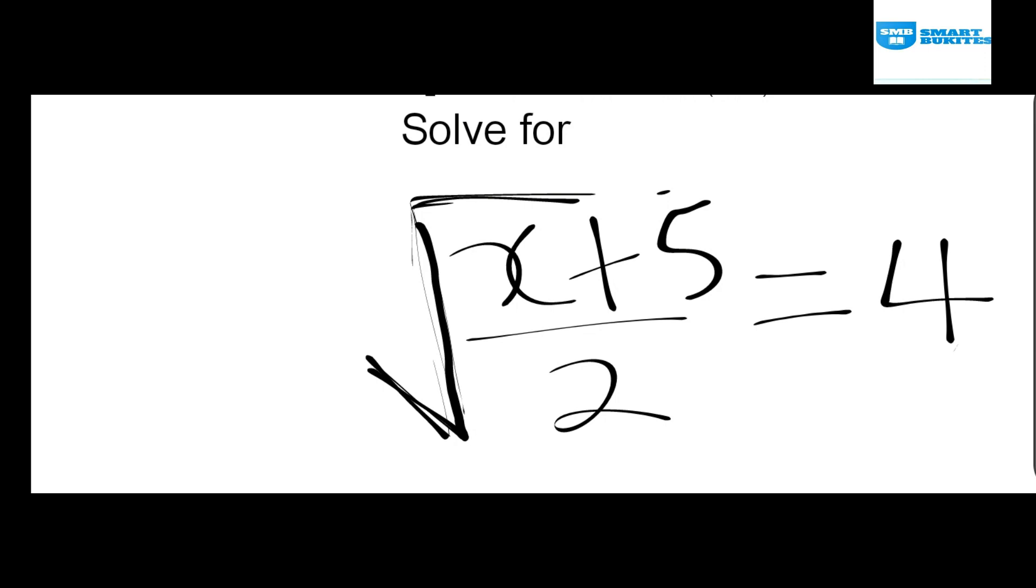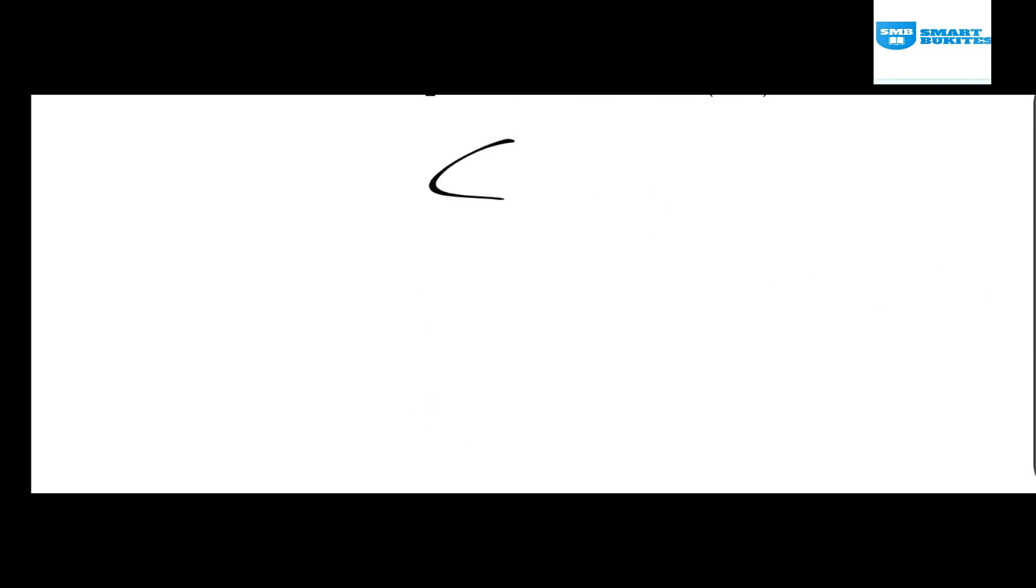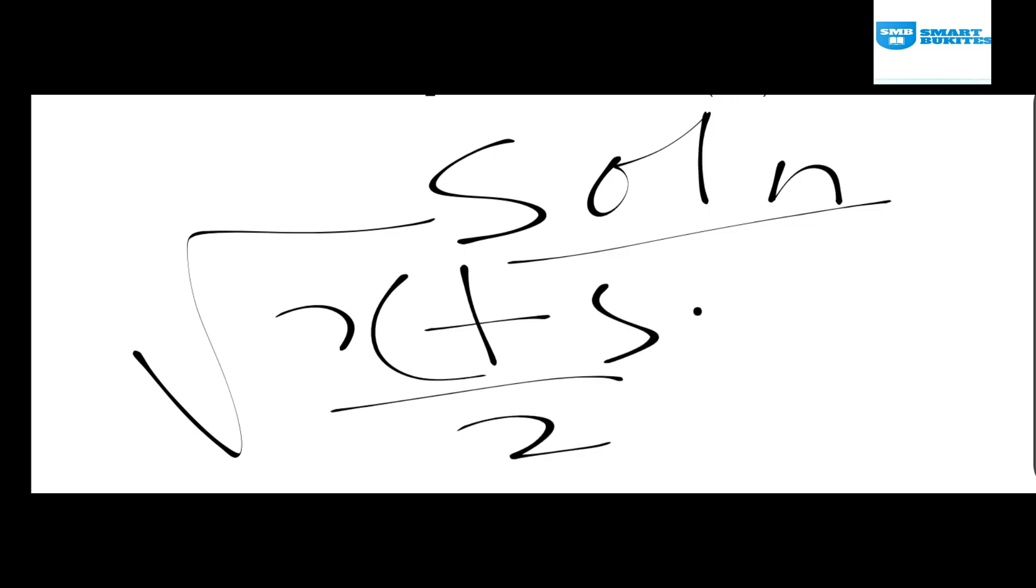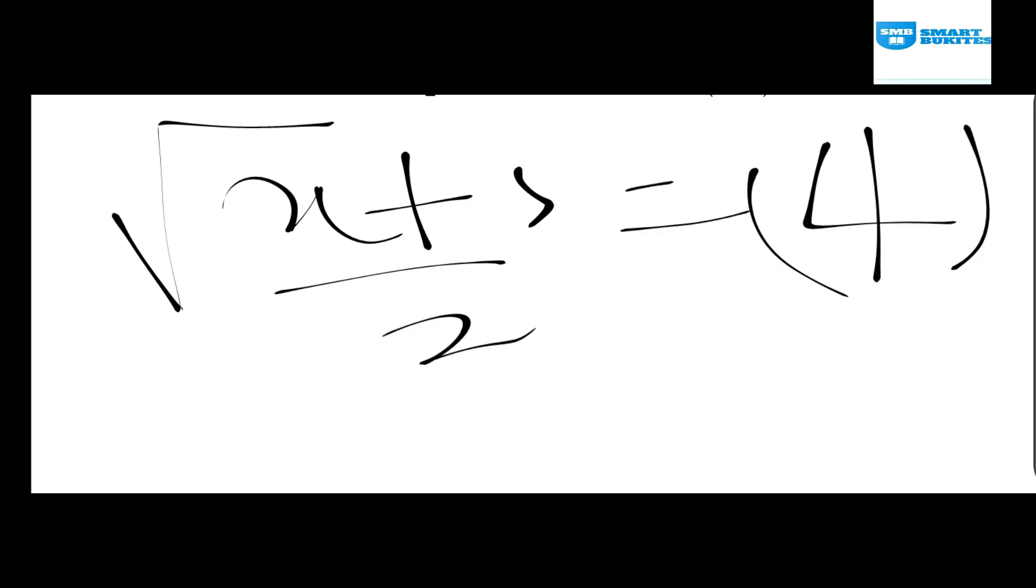So now we see the solution. If you remember, our question says root of x plus 5 over 2 is equal to 4, so meaning we have to take the square root of both sides which becomes root of x plus 5 over 2 is equal to 4 square here.